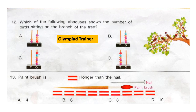Question 12: Which of the following abacuses shows the number of birds sitting on the branch of the tree? Count the number of birds on the branch — there are 6 birds. Now find which abacus shows 6. The correct answer is option C.